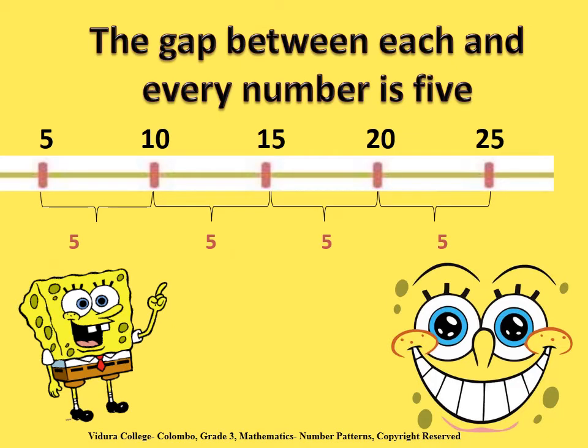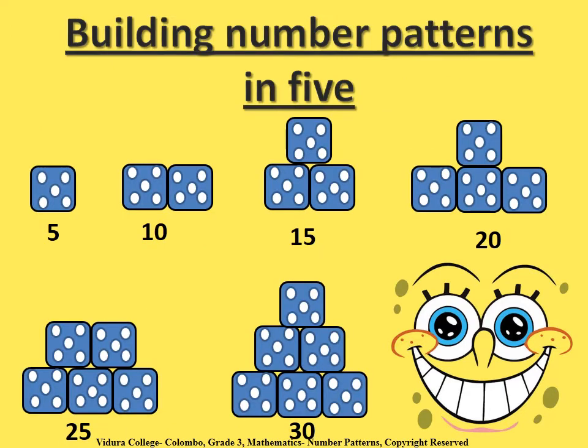So children, let's find the gap between the given numbers. The numbers are 5, 10, 15, 20, 25. As you can see, the gap between each and every number in this number line is 5. It is shown at the bottom of the number line using red. This is the way you build a number pattern in fives.